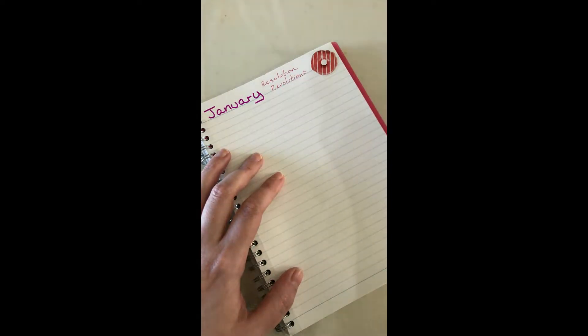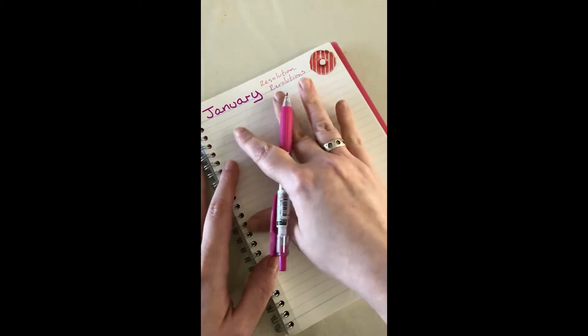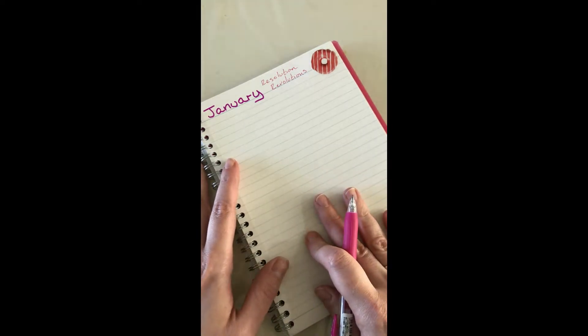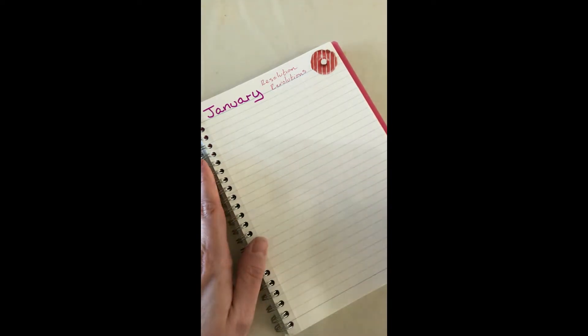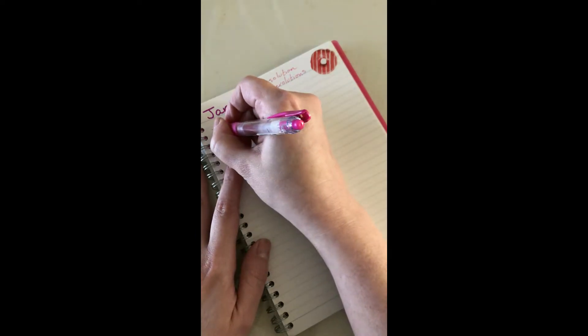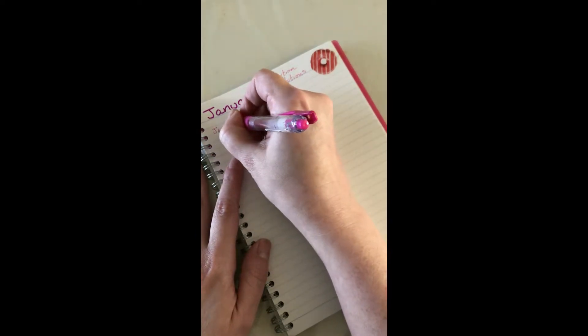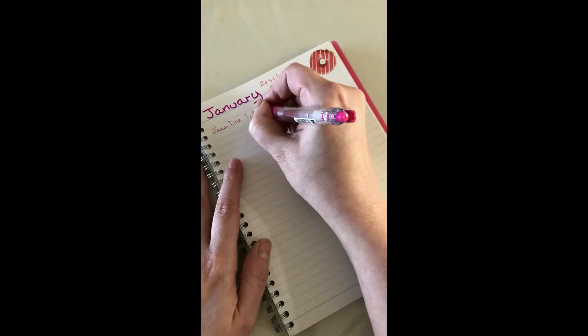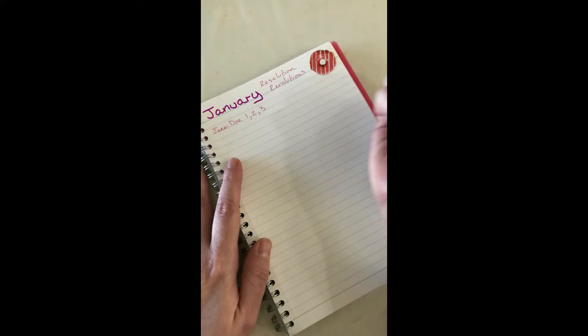Basically I'm going to start and just write down everything I can think of that's got to get done in January. I know an independent designer Jane Doe, let's say I've got three patterns I need to tech edit for her, so I do one, two, three.